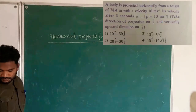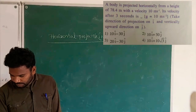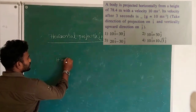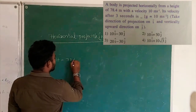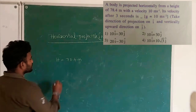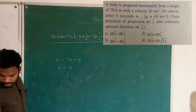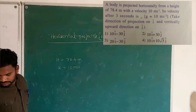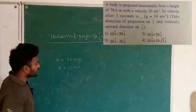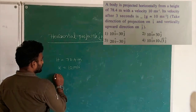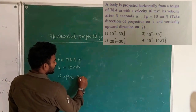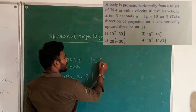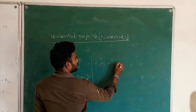As a first problem: a body is projected horizontally from a height H = 78.4 m with velocity U = 10 m/s. After 3 seconds, what is the velocity in vector form? The velocity vector at any time t is V = U î − Gt ĵ. We substitute: U = 10, G = 10, t = 3 seconds.